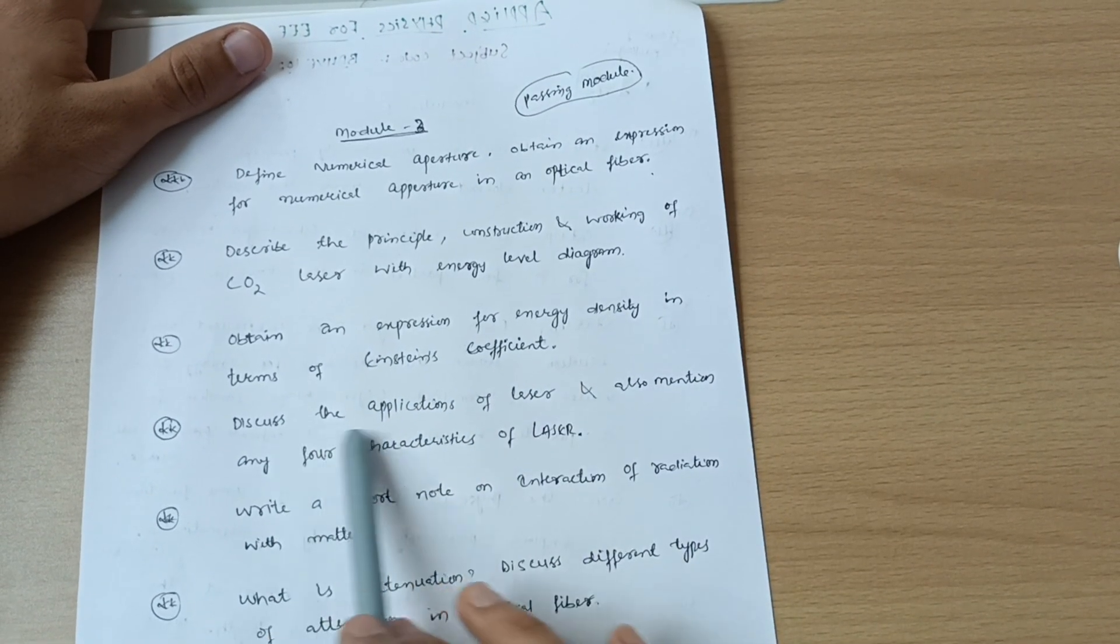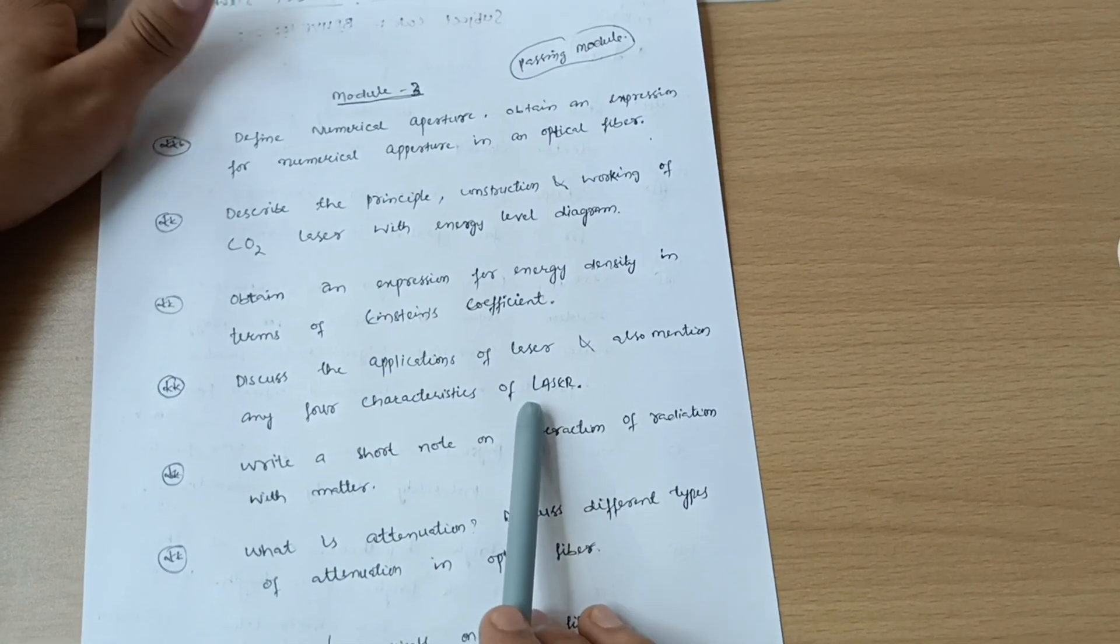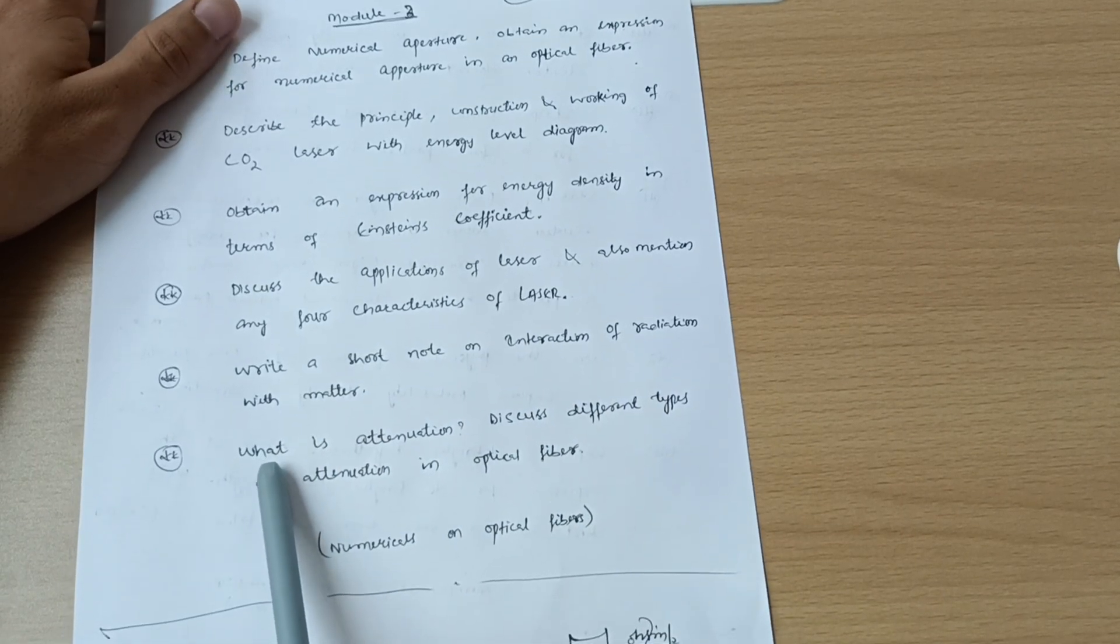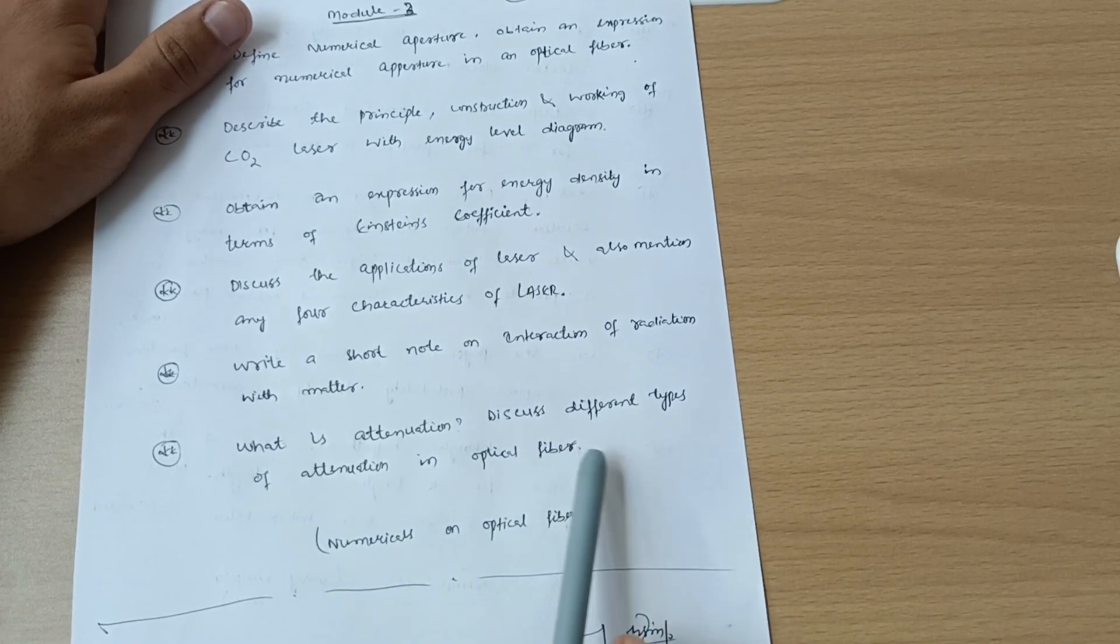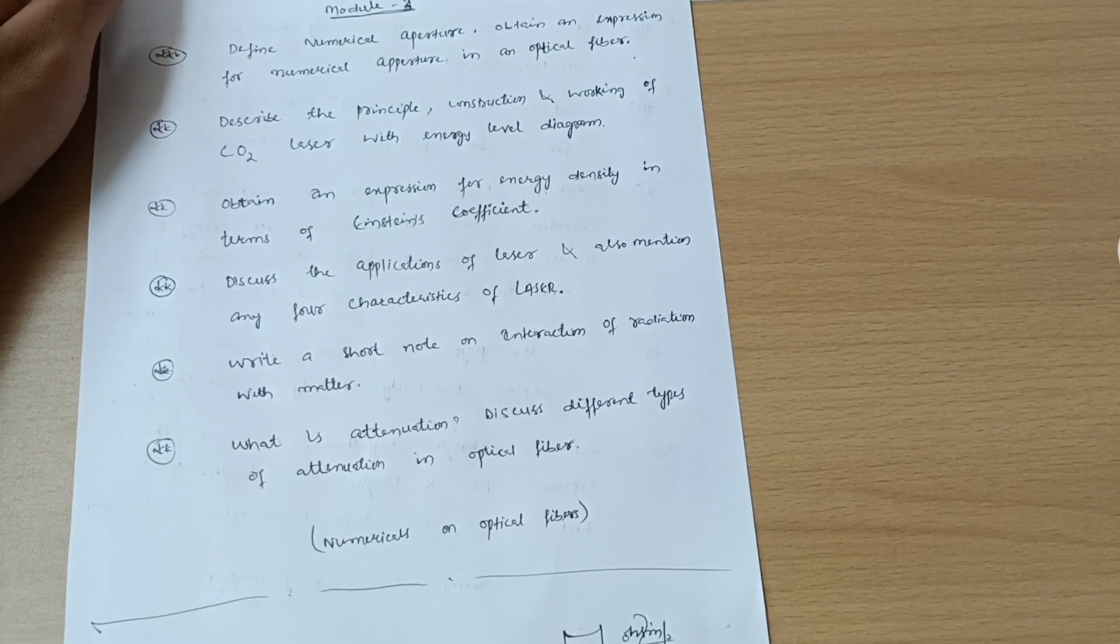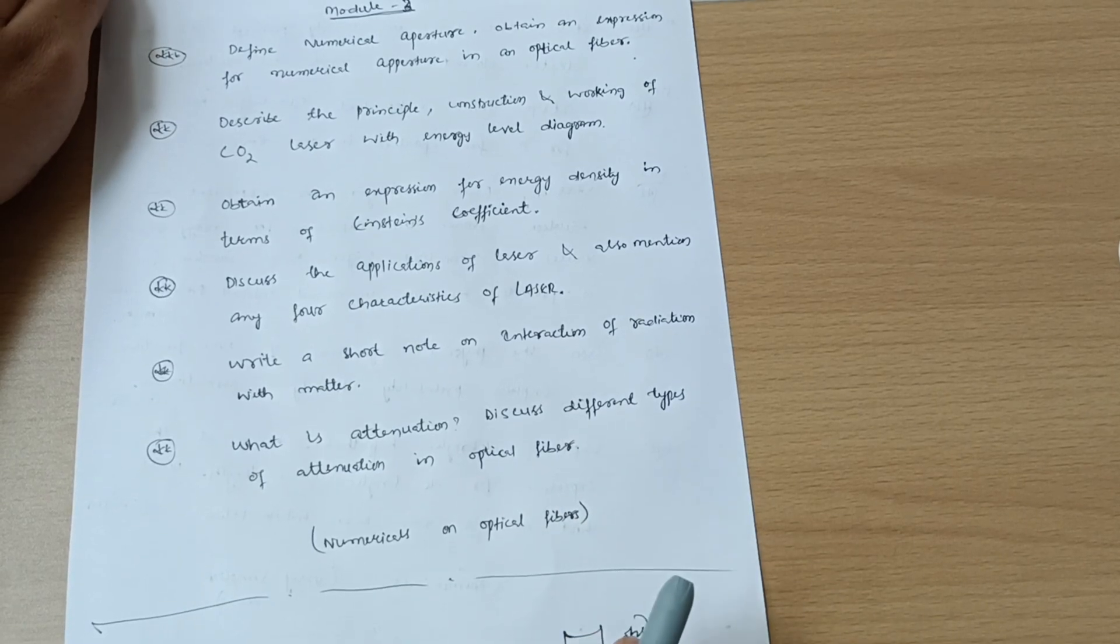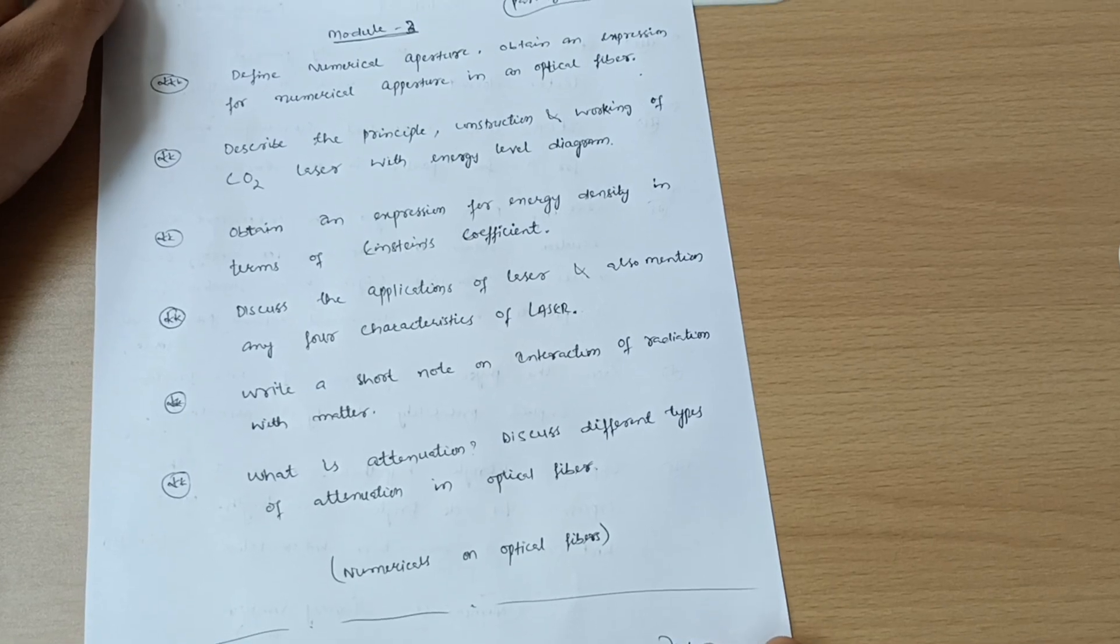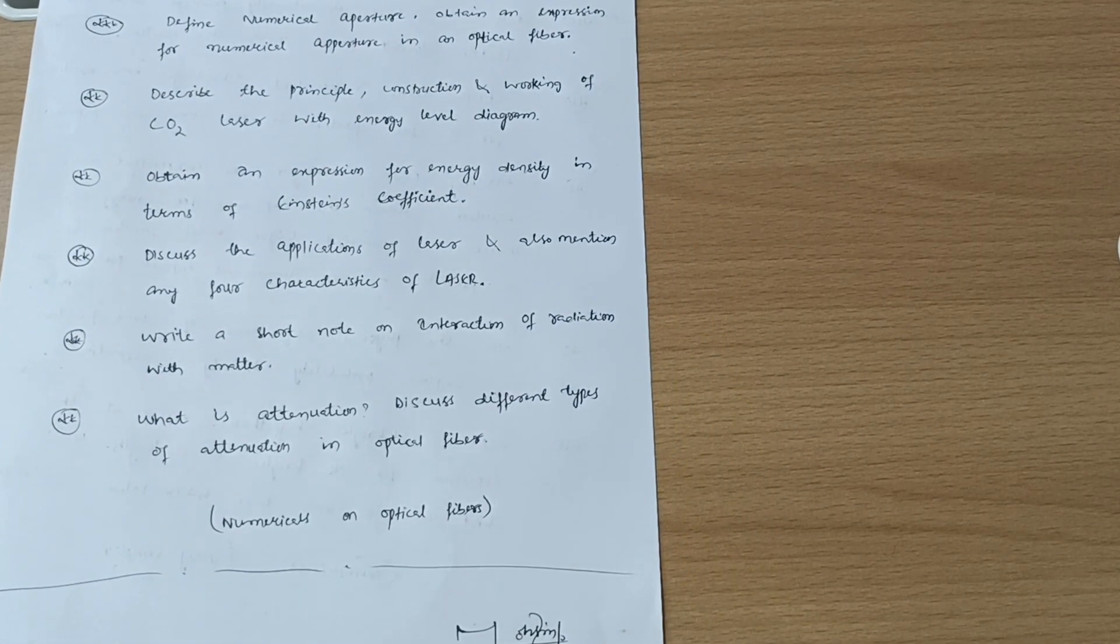Discuss the applications of laser and also mention any four characteristics of lasers. Next is write a short note on interaction of radiation with matter. Last but not least is what is attenuation, discuss different types of attenuation in optical fiber. Also go through numericals of optical fibers. Only one thing is there, if you just practice the problems you will find easiness in physics numericals. It is not like the PU physics that is somehow tougher than this engineering physics.